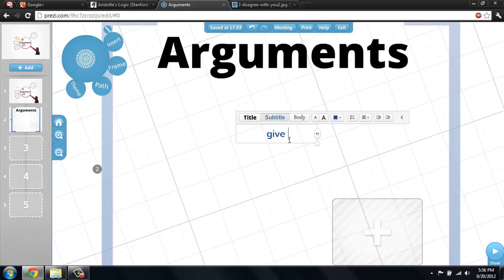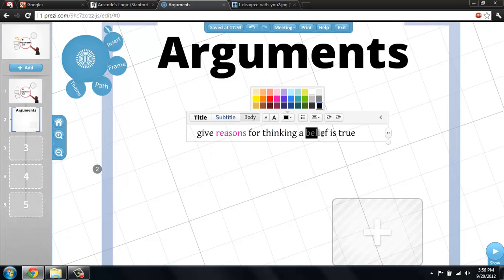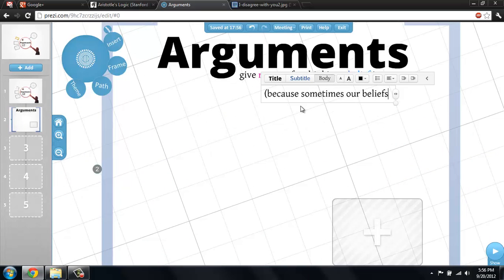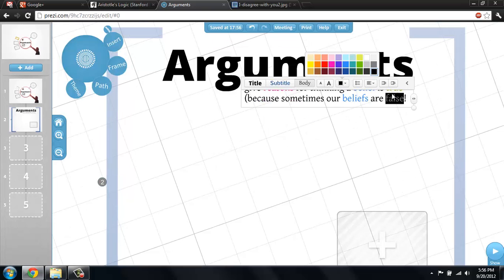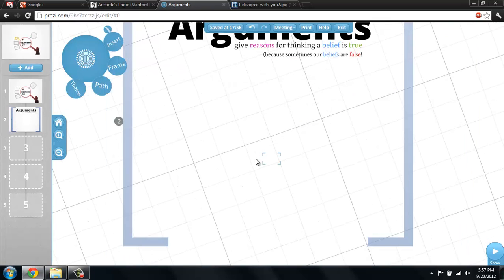The point is that an argument gives reasons for thinking a belief is true. This is important because sometimes our beliefs are false, and without openly exchanging and inspecting our reasons, we're liable to make serious mistakes.